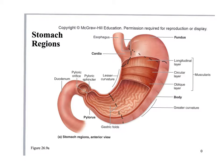The stomach is a rounded structure, so it has a lesser curvature on the medial inside and a greater curvature on the lateral outside. Just like we discussed Wednesday, the stomach has four distinct tissue layers: mucosa, submucosa, muscularis, and serosa on the outside.